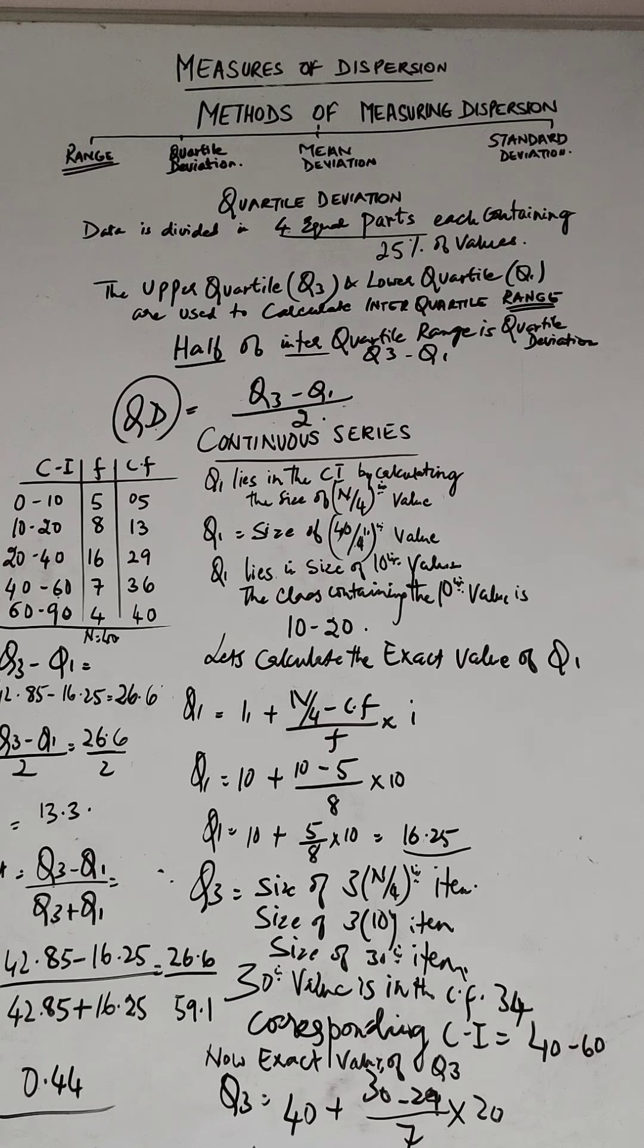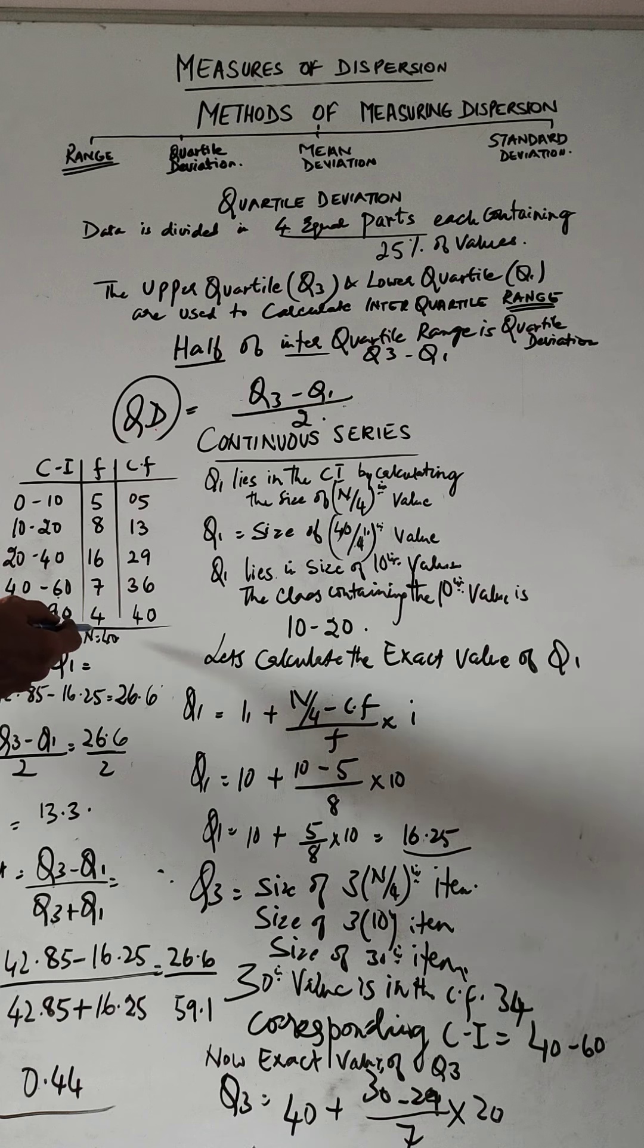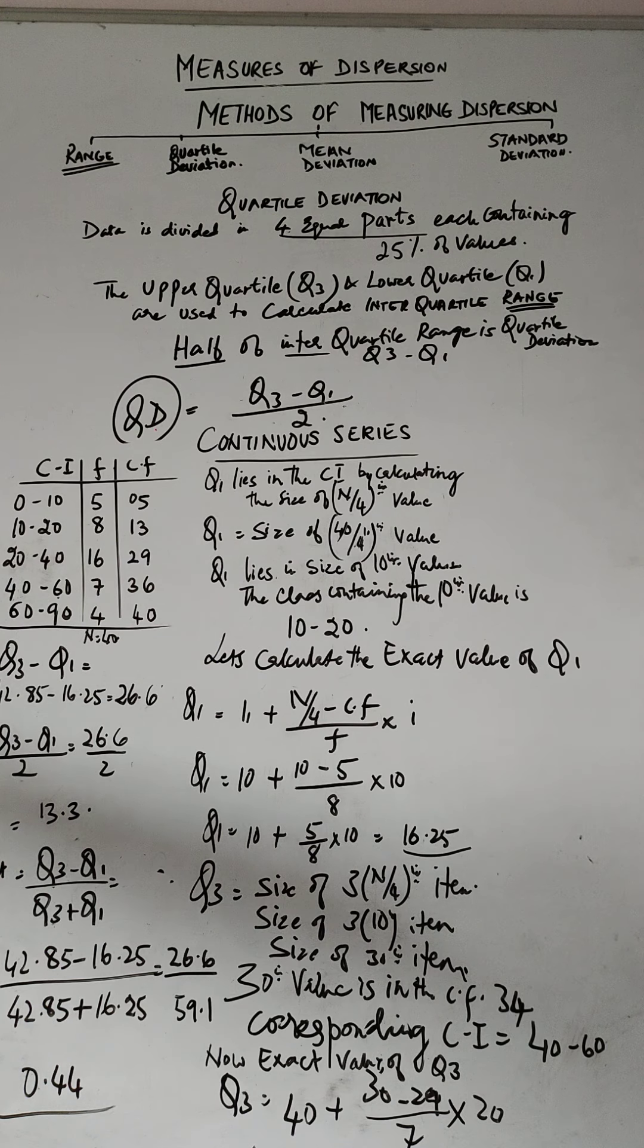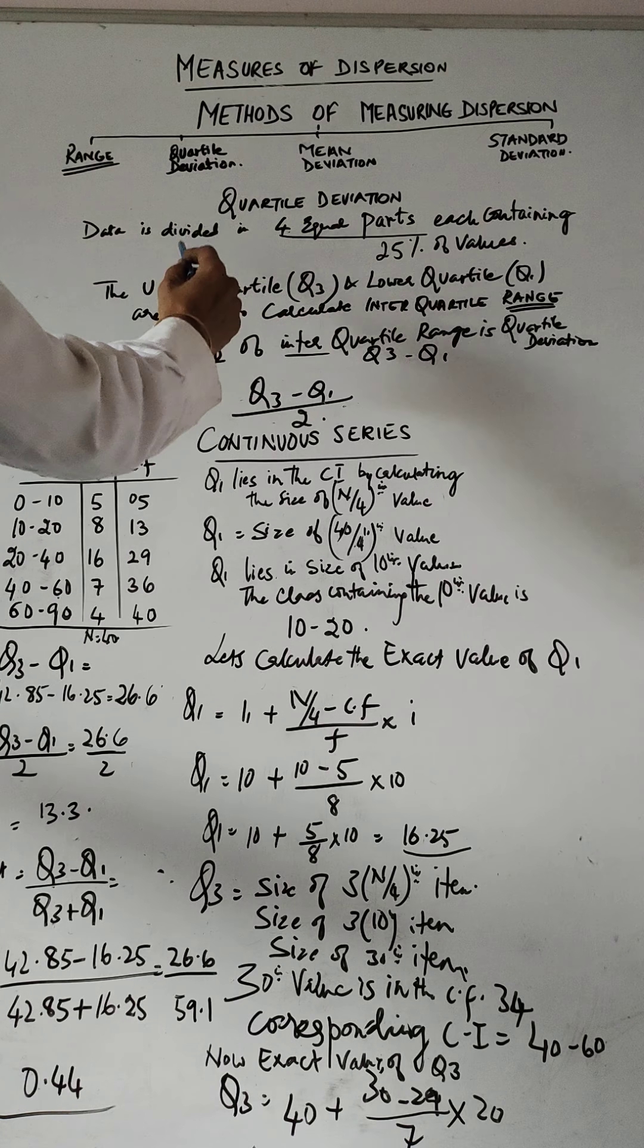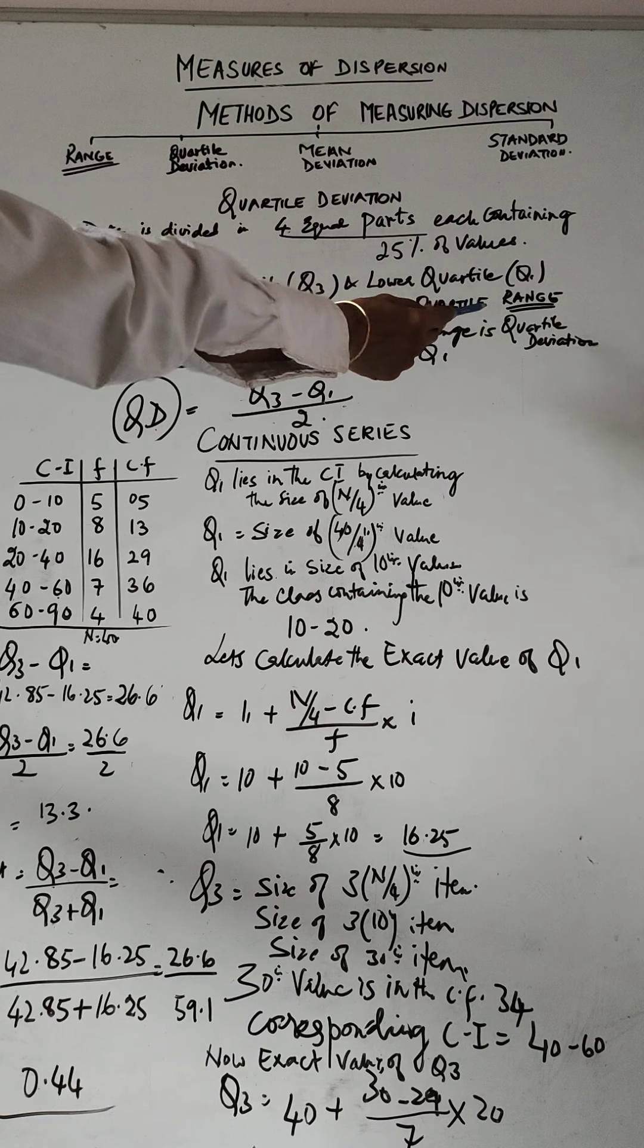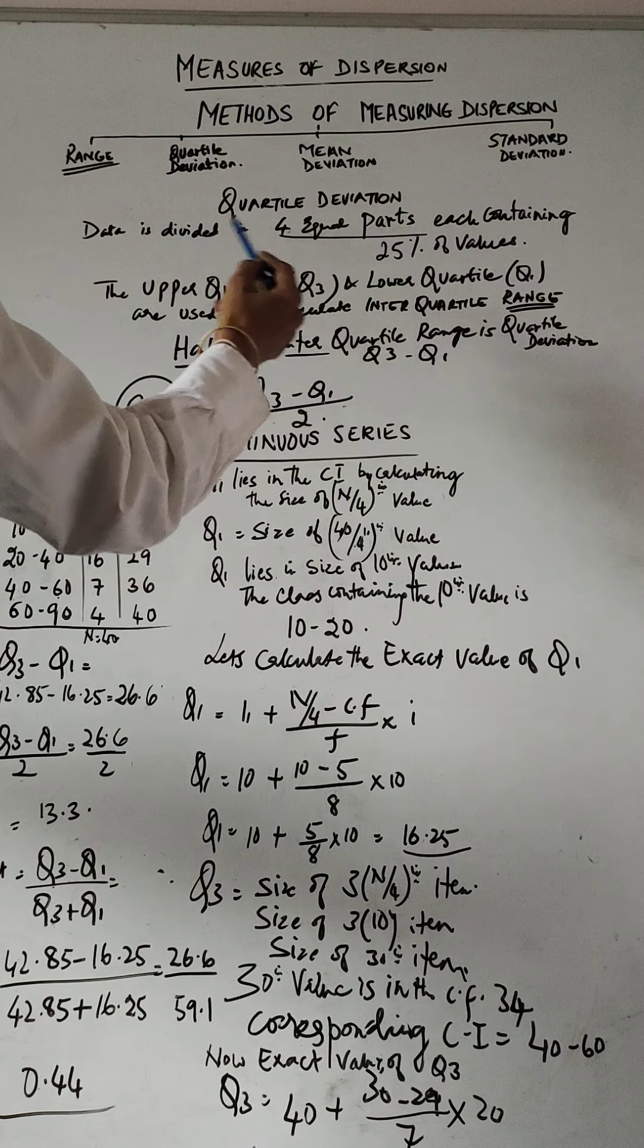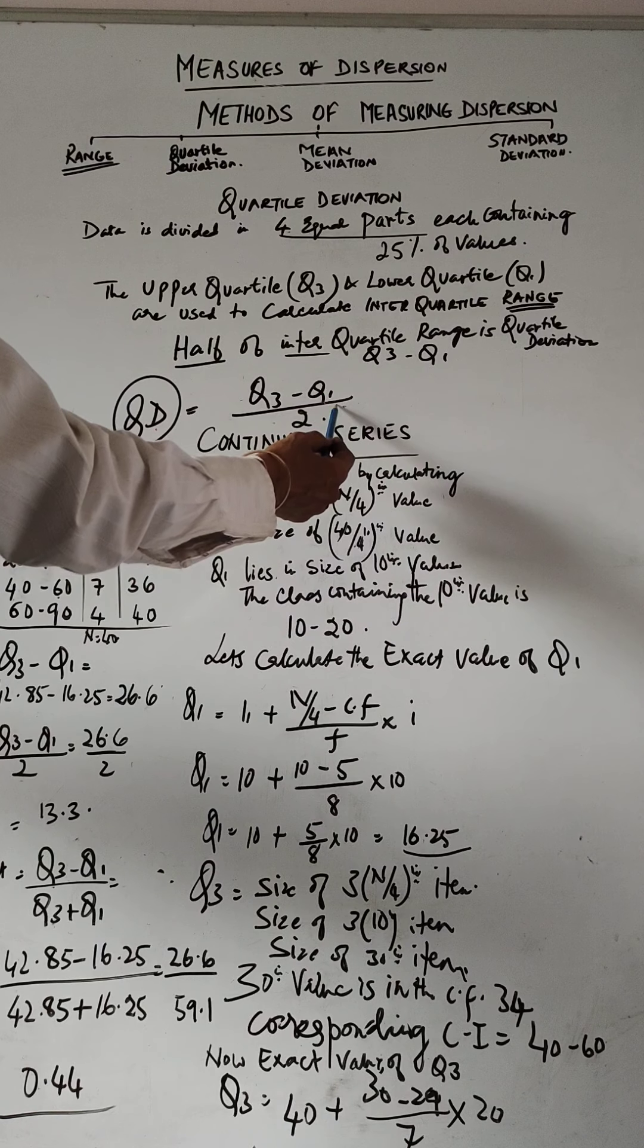In the continuous series, we first work out the cumulative frequencies. Then we calculate the upper quartile Q3 and the lower quartile Q1. With that we will calculate the interquartile range. Half of the interquartile range is quartile deviation, which is Q3 minus Q1 divided by 2. Continuous series is also known as the class interval series.